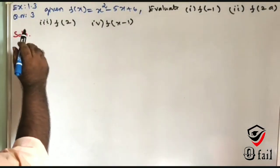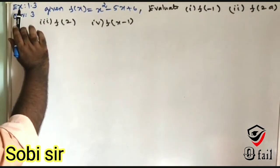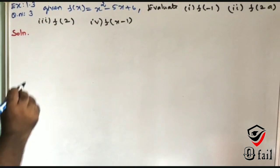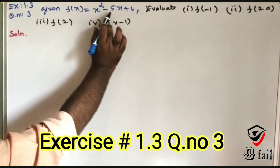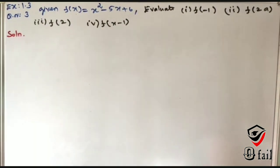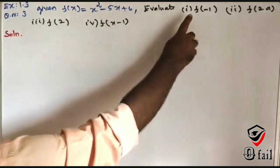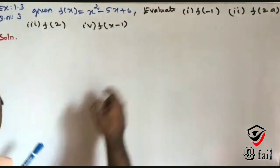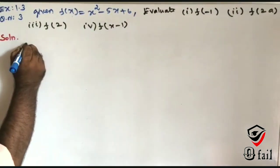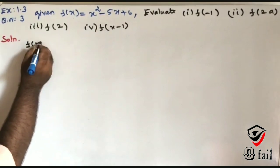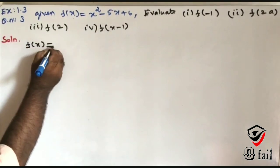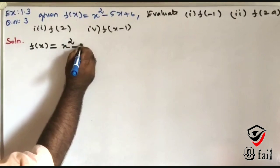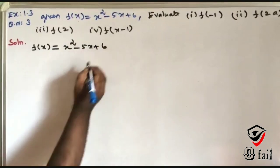Hi students, I am teaching Exercise 1.3, question number 3. The function F of X is equal to X squared minus 5X plus 6.